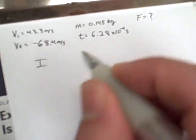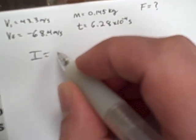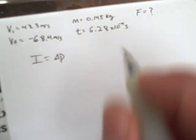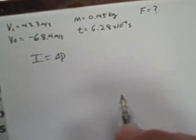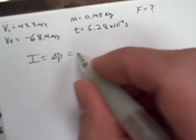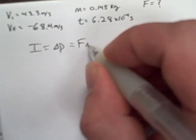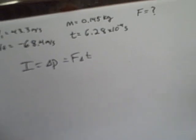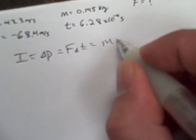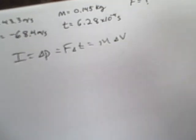We know the relationships that we're looking for are that impulse is equal to a change in momentum, which is what the baseball has experienced. That's going to be equal to the force that we're looking for times the change in time over which that occurs. And that is equivalent to mass times the change in velocity.